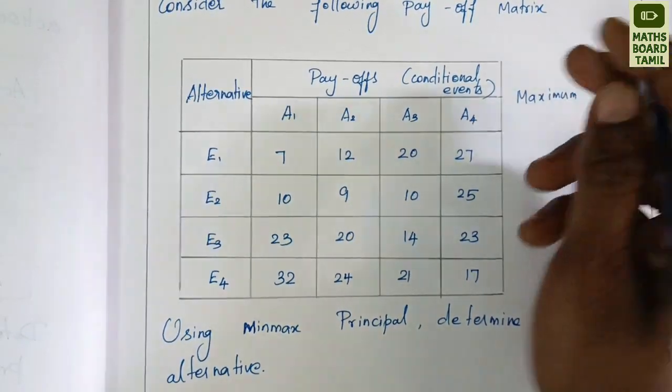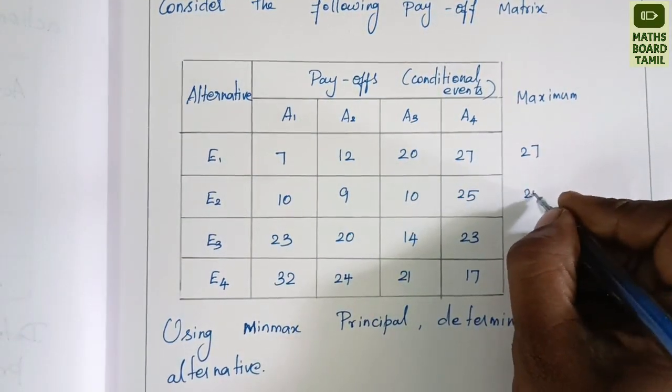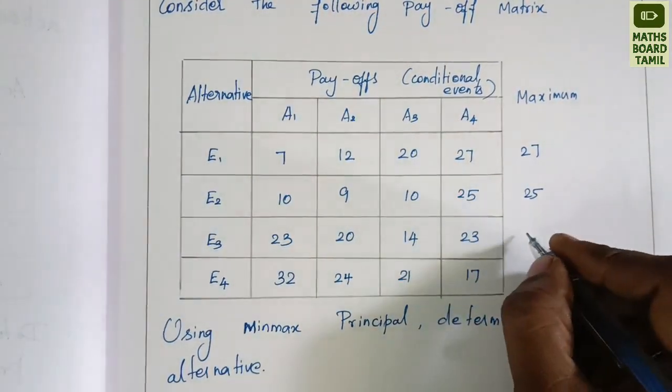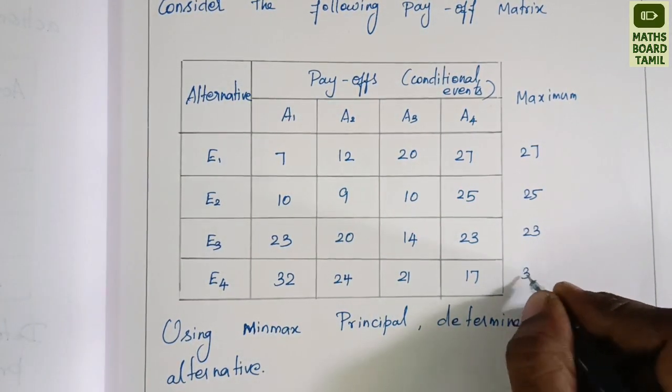In each row, we find the maximum value. In this row, 25 is maximum. In this row, 23 is maximum. In this row, 32 is maximum.